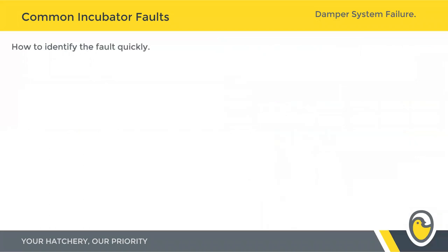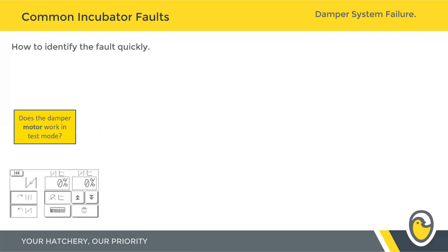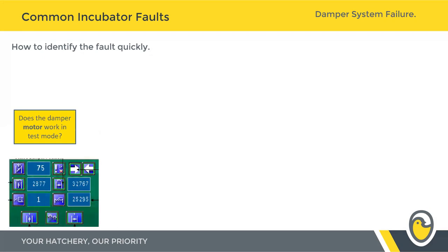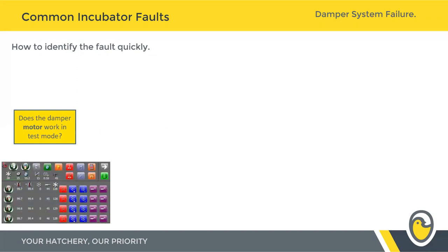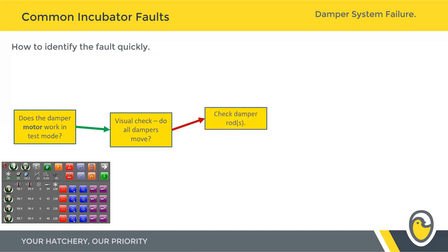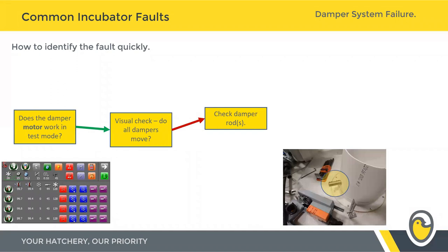Now we're aware of a fault with the damper system and we need to identify it as quickly as possible — ideally without going inside the machine, but being aware we may need to transfer the eggs to give ourselves time to work in a more relaxed manner. Go into test mode straight away and manually drive the damper open and closed. Does the damper motor physically move? On a Gen 4 monochrome, Gen 4 colour, or Rock screen, you've got all the functions there to drive the damper open and closed.